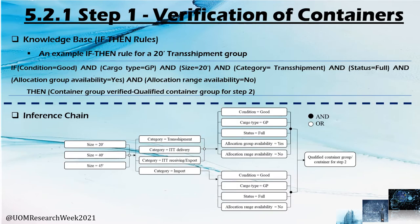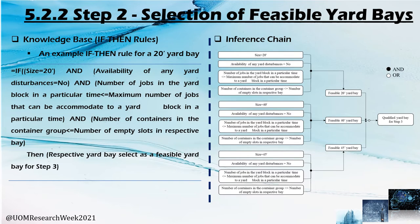Step one — the knowledge base contains if-then rules for each and every container type. Here you can see an example if-then rule for 20-foot transshipment containers. What we are doing is checking the suitability of containers to be provided yard locations by the developed model. You can also see the inference chain of step one.